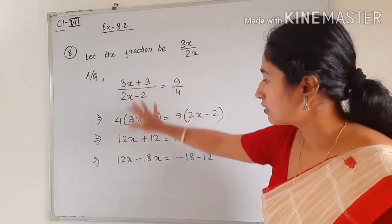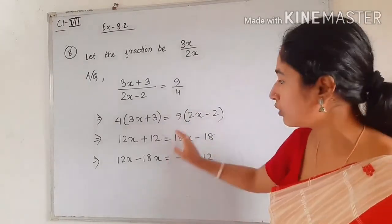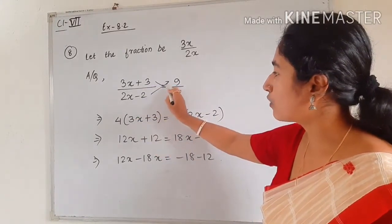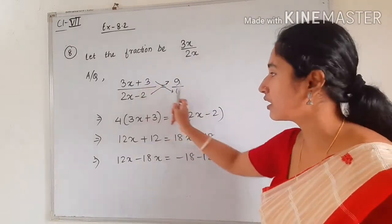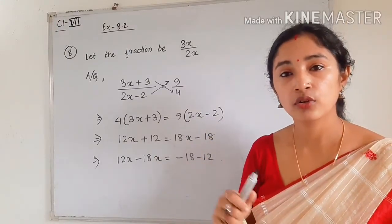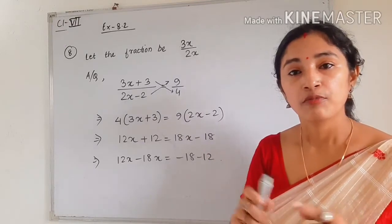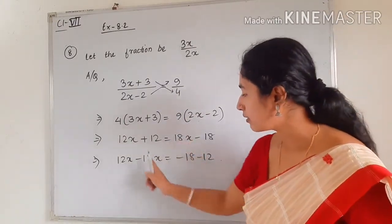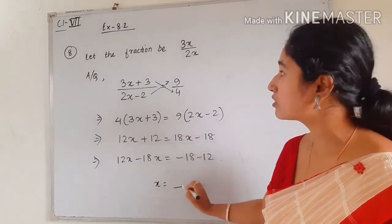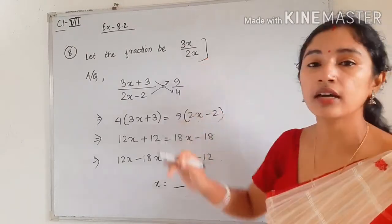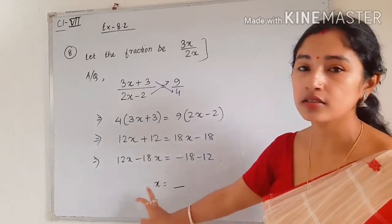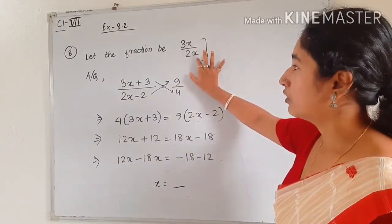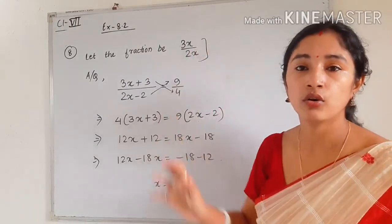After cross multiplication, we collect like terms and solve to find the value of x. Once we have x, we substitute it back into the original fraction 3x by 2x. For example, if x turns out to be 7, then the fraction would be 21 by 14. Please try to complete the remaining steps and find the actual value of x to get the original fraction.